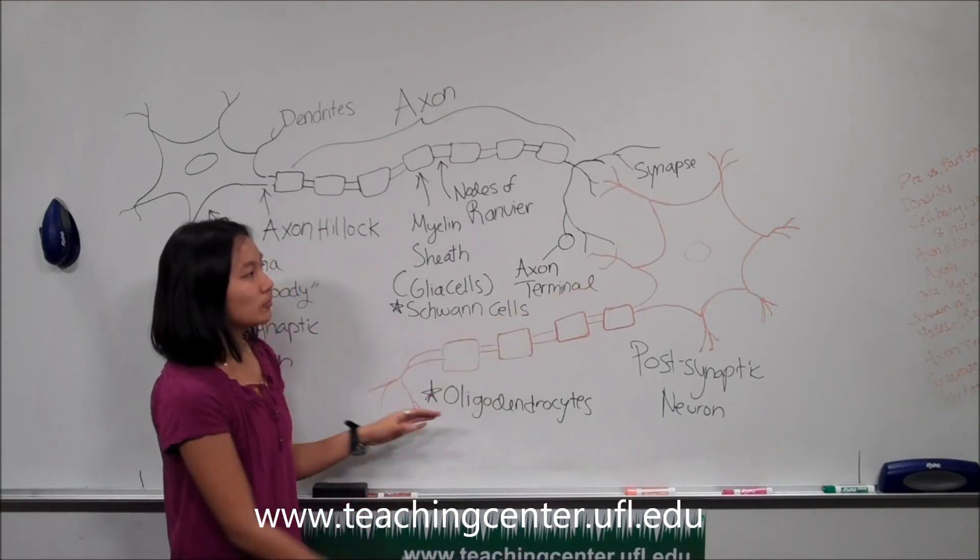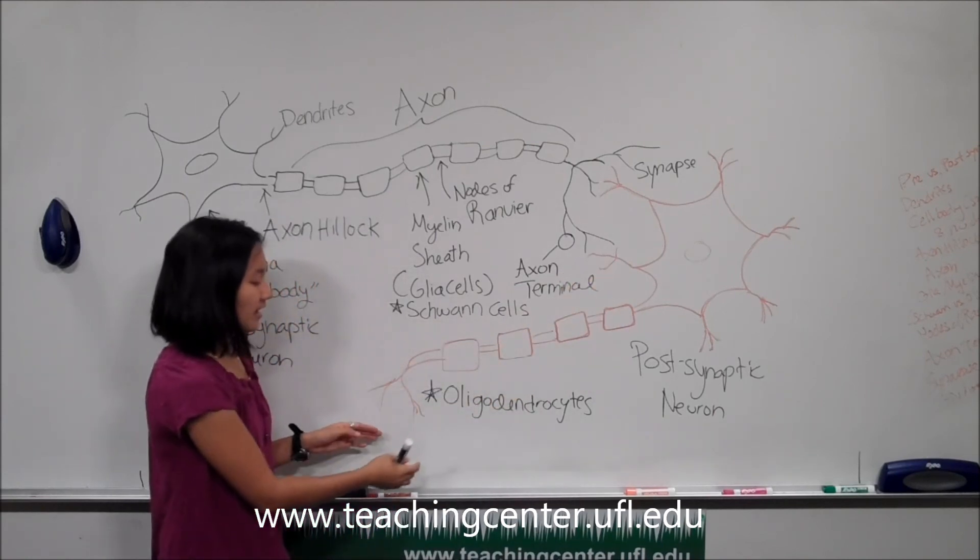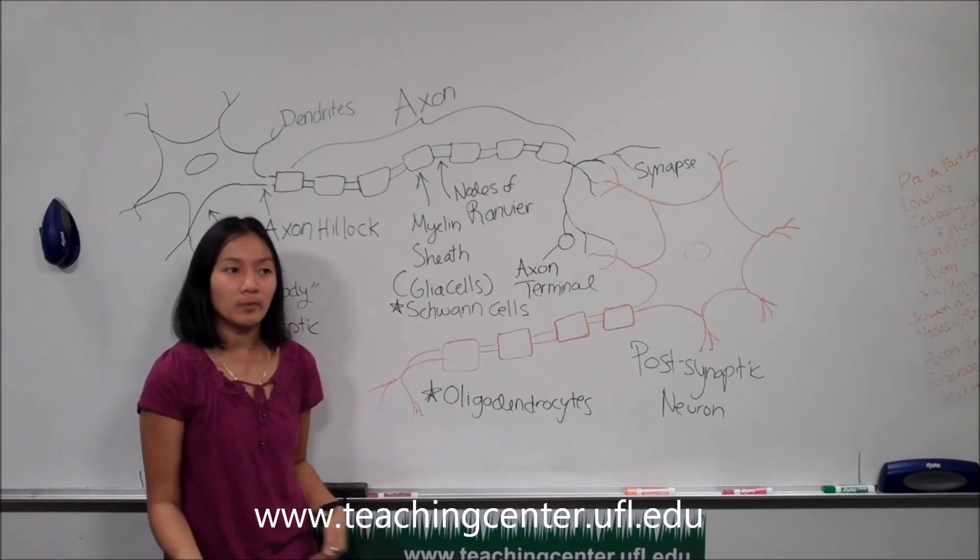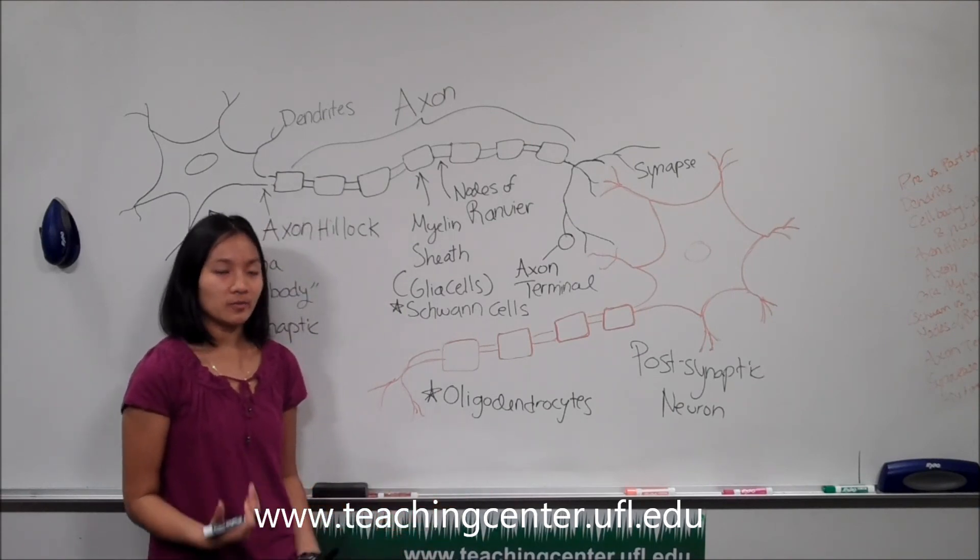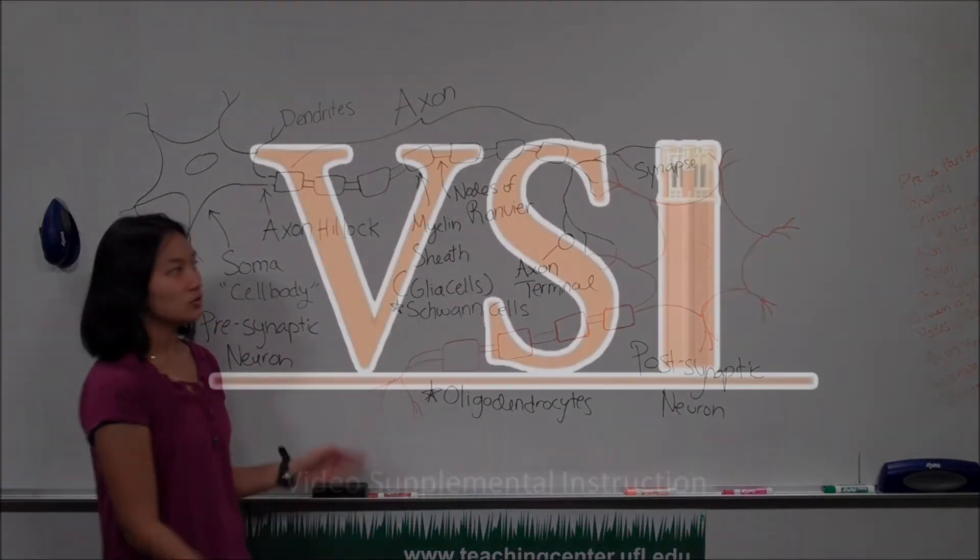Okay, so this postsynaptic neuron will once again generate an action potential, and then it can synapse once again on maybe another neuron or possibly a target organ such as your heart or muscles. And this is the basic anatomy of the neuron.